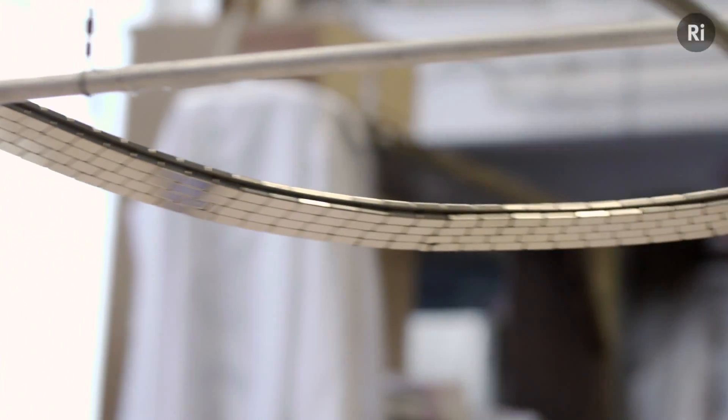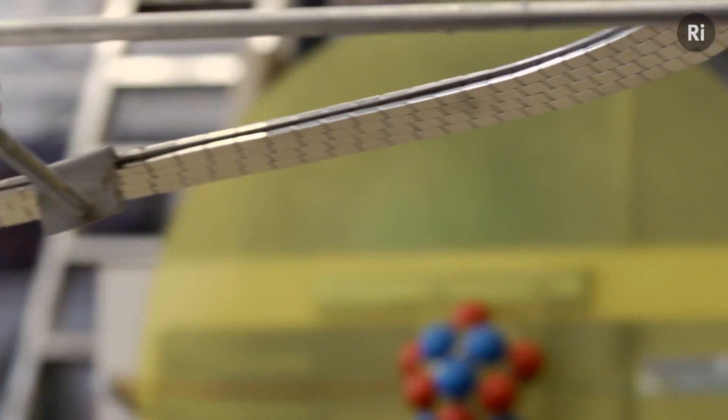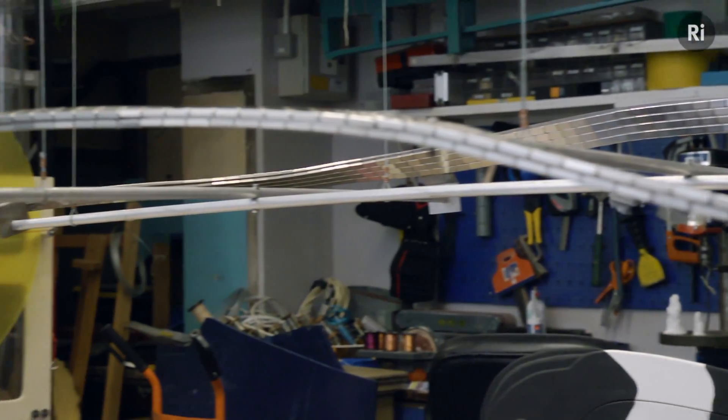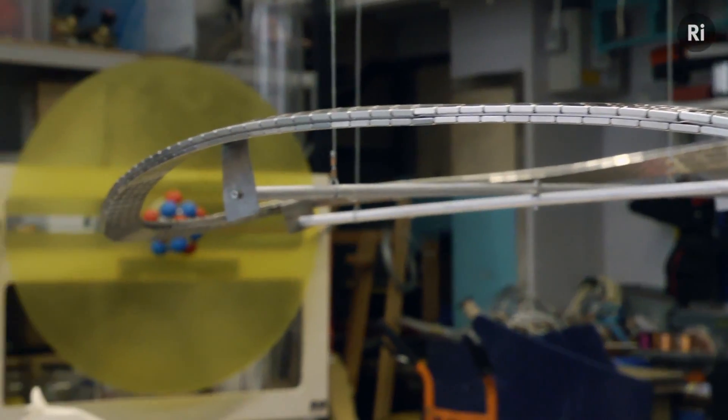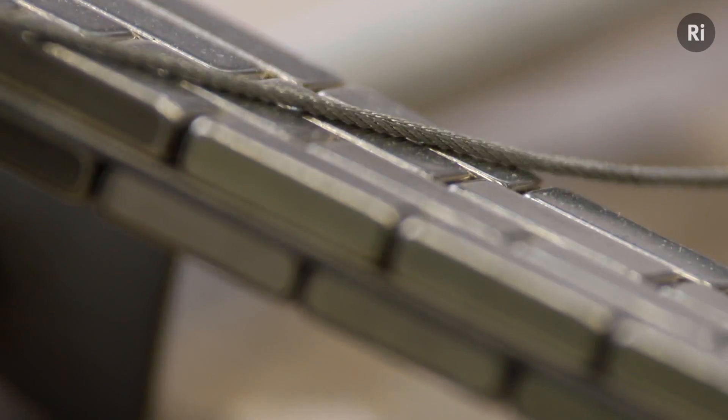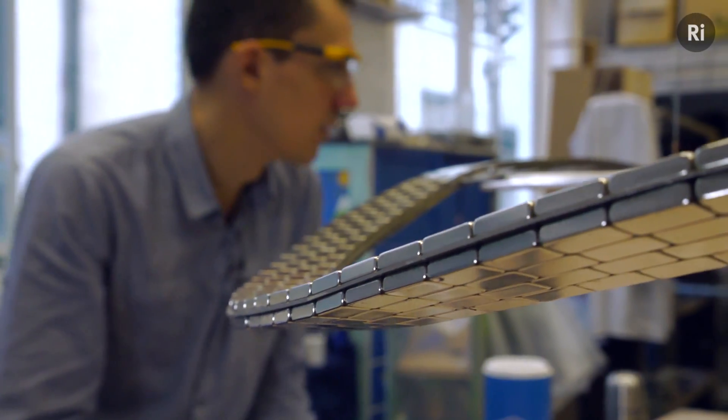I wanted to show you one of my favourite props from last year's Christmas lectures, which is a Möbius strip steel track covered in maybe two or three thousand of these super-strong neodymium magnets.